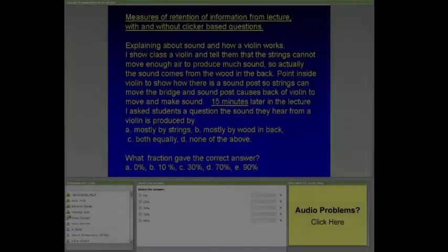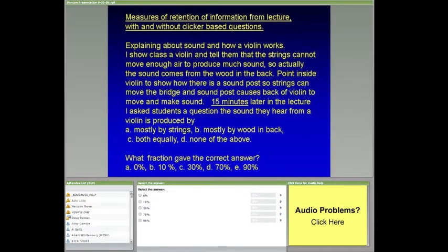Now 15 minutes later, in the same lecture where he taught this, he asked his students what do they hear when a violin is played? Is it A, mostly the strings, B, mostly the wood, C, both equally, or D, none of the above? Now just for fun, I'm going to take a poll of you. My question for you is, what fraction of Carl Wyman's students gave the correct answer? Is it A, zero percent? Is it 10 percent? Is it 30 percent? Is it 70 percent? Is it 90 percent? Remember, it's in the same class that he gave the explanation, and he gives clear explanations. Fifteen minutes later, he stopped to see whether they got it.